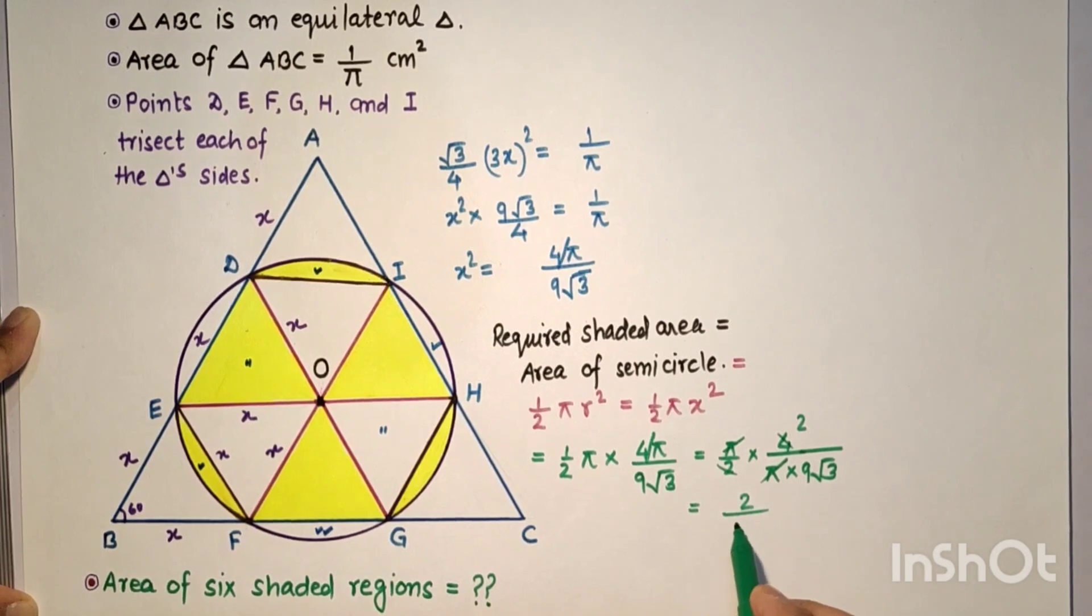The π terms cancel, and the 2s multiply to give 4 in the denominator, so we get 2/(9√3).